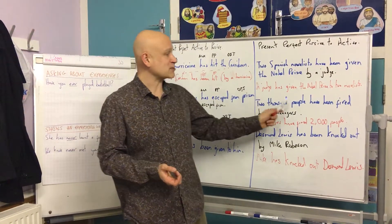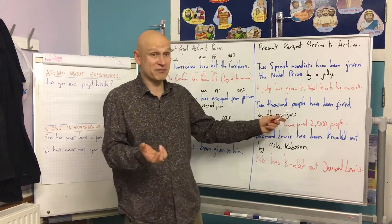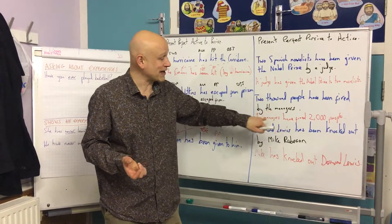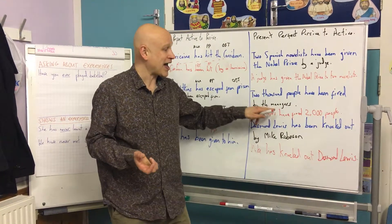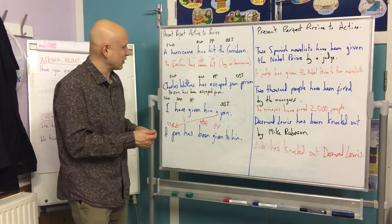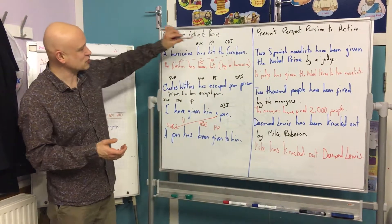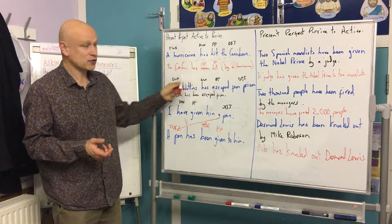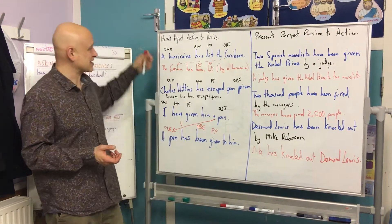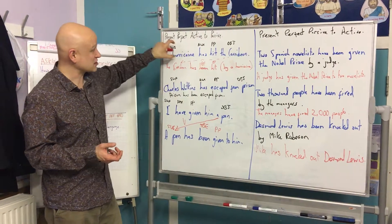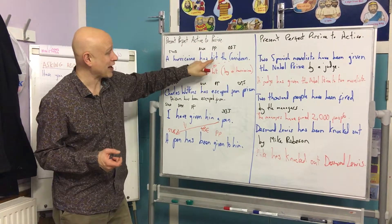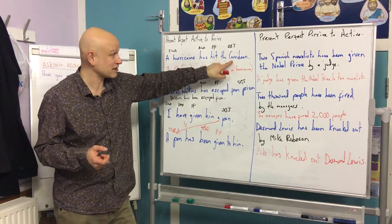'2,000 people have been fired by the managers,' and we wanted to show what they did, so we made this active: 'The managers have fired.' So look at what we're doing here when we change a sentence — look at the language we have to use. An active sentence in the present perfect has: subject, auxiliary verb have or has, and the past participle and object.